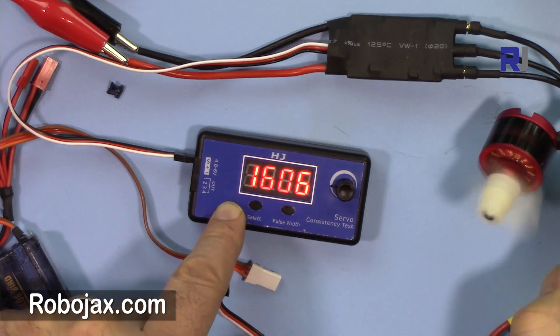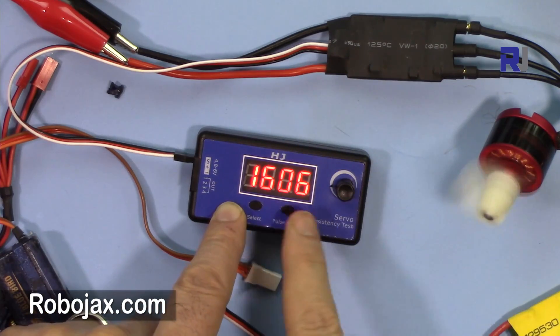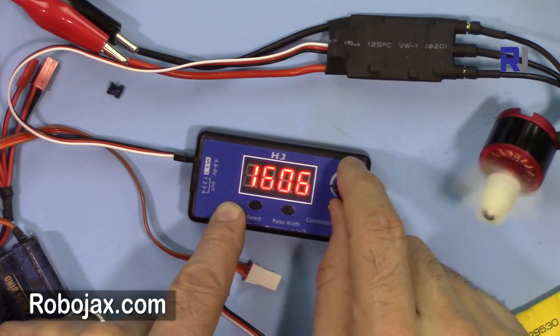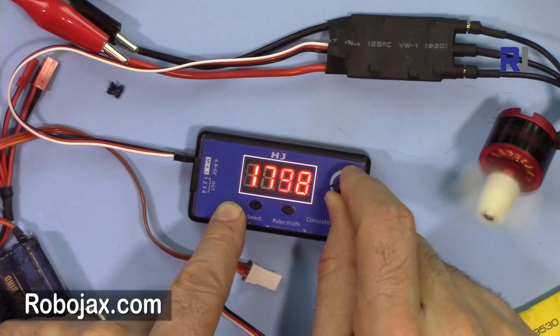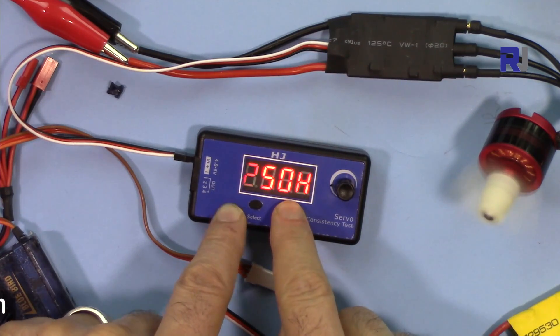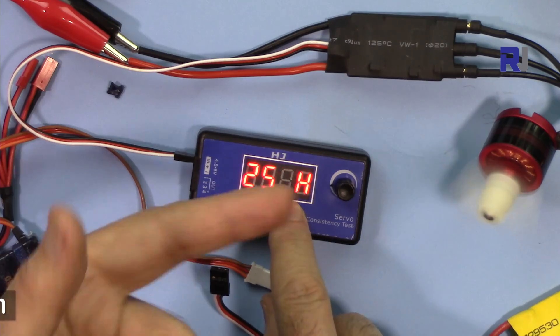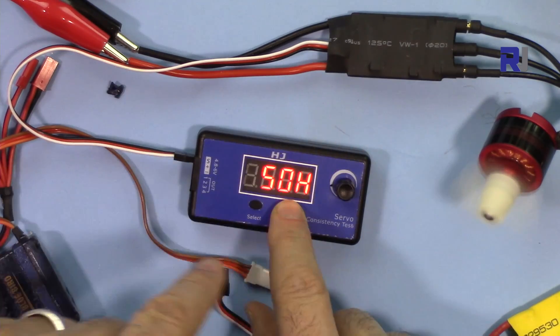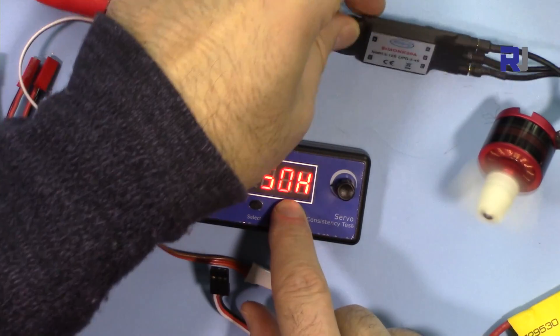As you can see, this motor with the ESC starts at 1600. The pulse width has no effect with this servo that I have here.